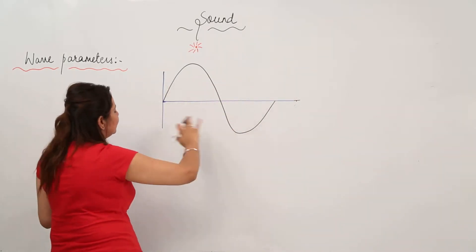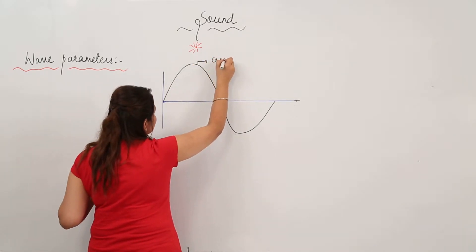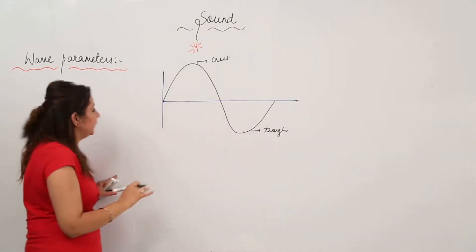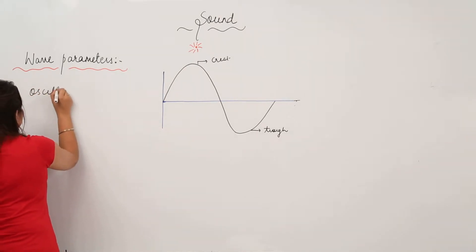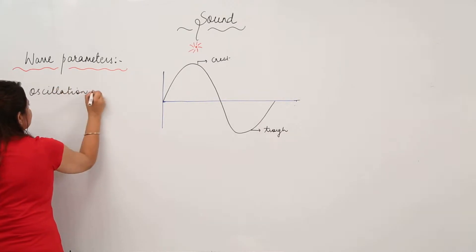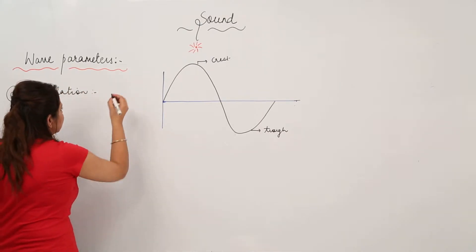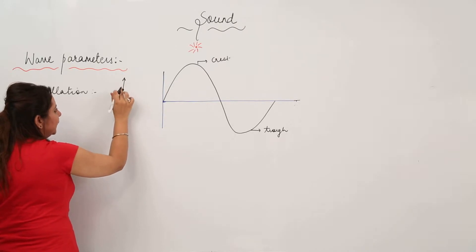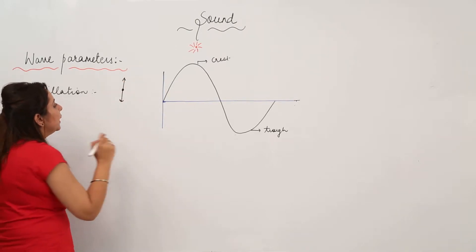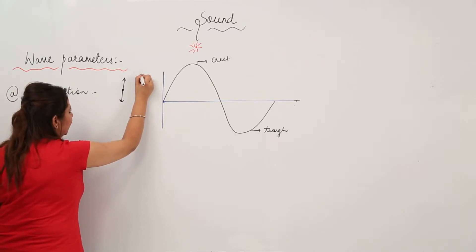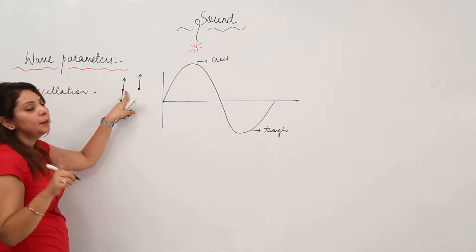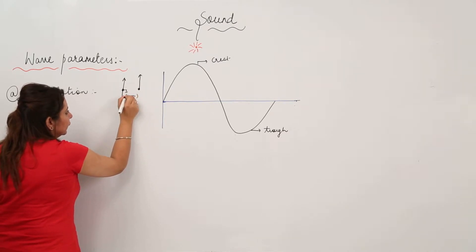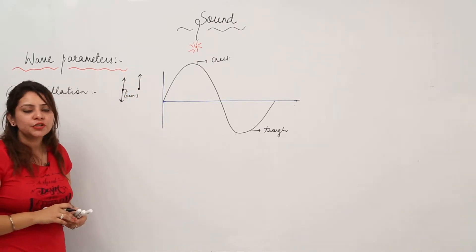This is a transverse wave — this is a crest and this is a trough. We can have many information related to the wave. The first is oscillation. What is oscillation? Suppose I have a particle and it vibrates up and down — whenever a particle vibrates up and down it completes one oscillation. But if a particle vibrates only in one direction, that is not an oscillation. Oscillation is the complete movement of a particle about its mean position.